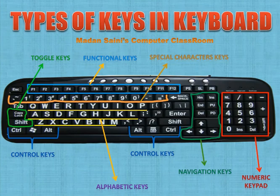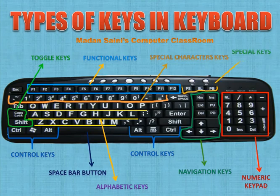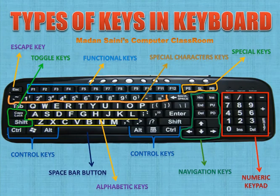Eighth, the spacebar button — it is used to add a space between words when using word processing software. Ninth, special keys — these include the Print Screen key, Scroll Lock key, and Pause Break key. And the last key group is the Escape key.